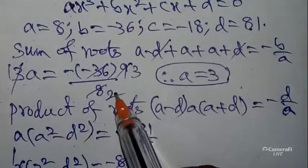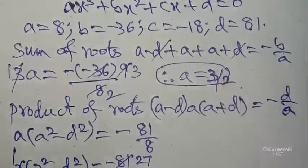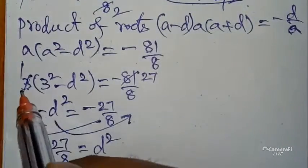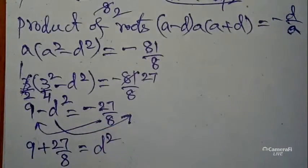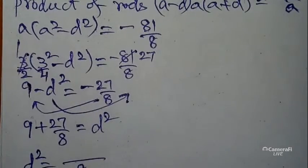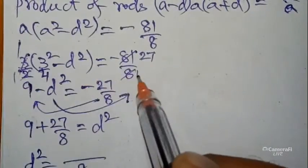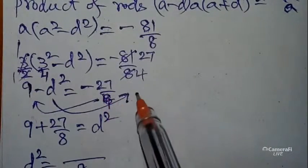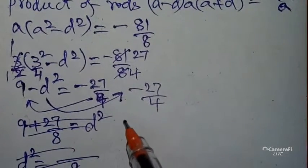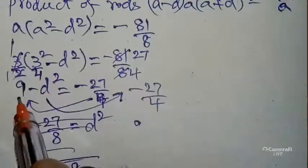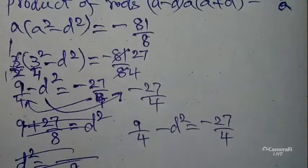Wait, my dear students, a = 3/2, not 3. So we have (3/2)(9/4 - d²) = -81/8. This becomes 27/4 - d² = -27/4. Continuing, 9/4 minus 27/4 plus 27/4 equals d².